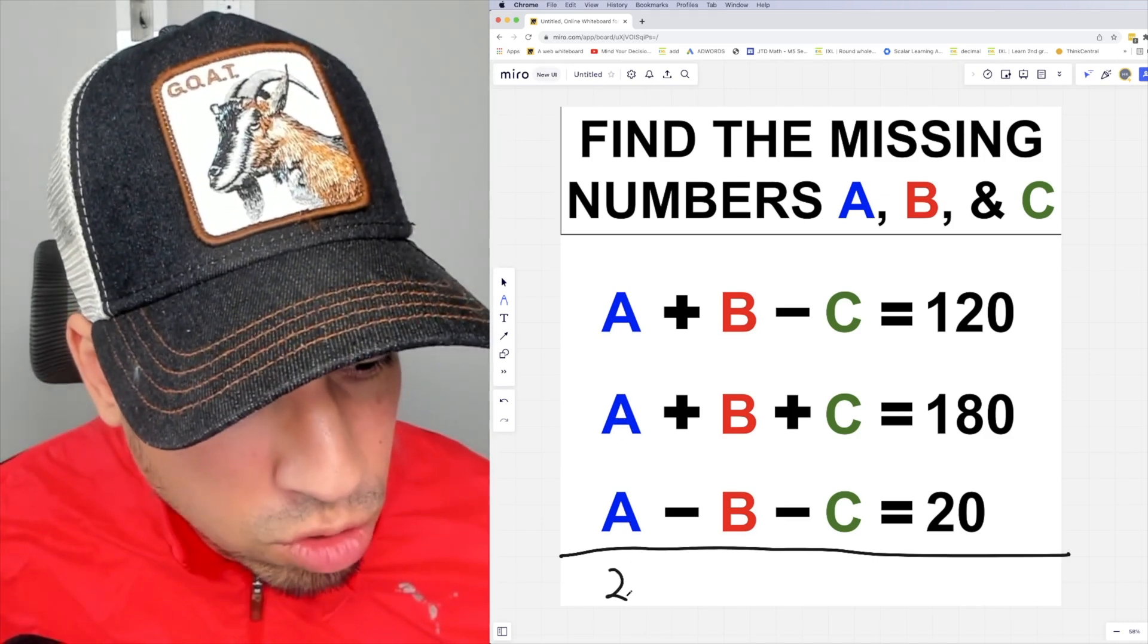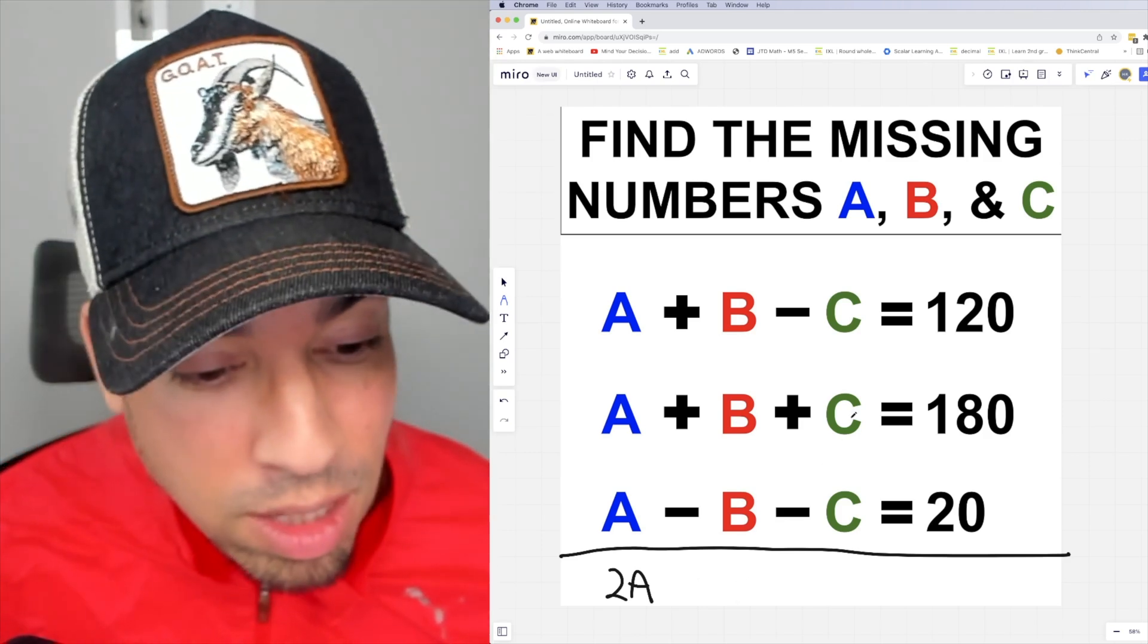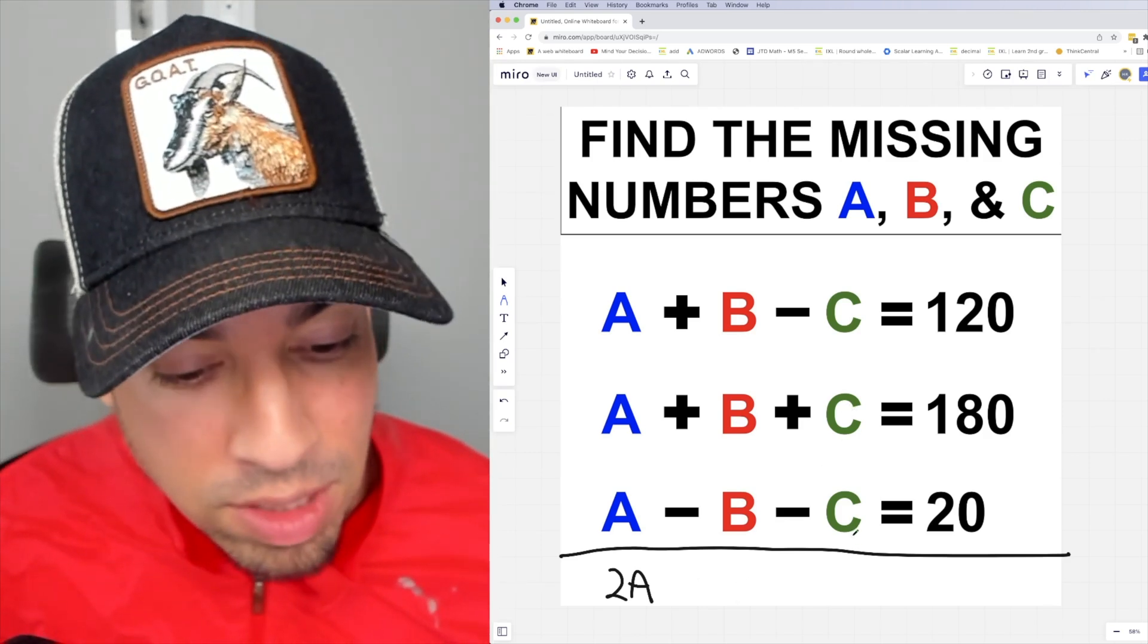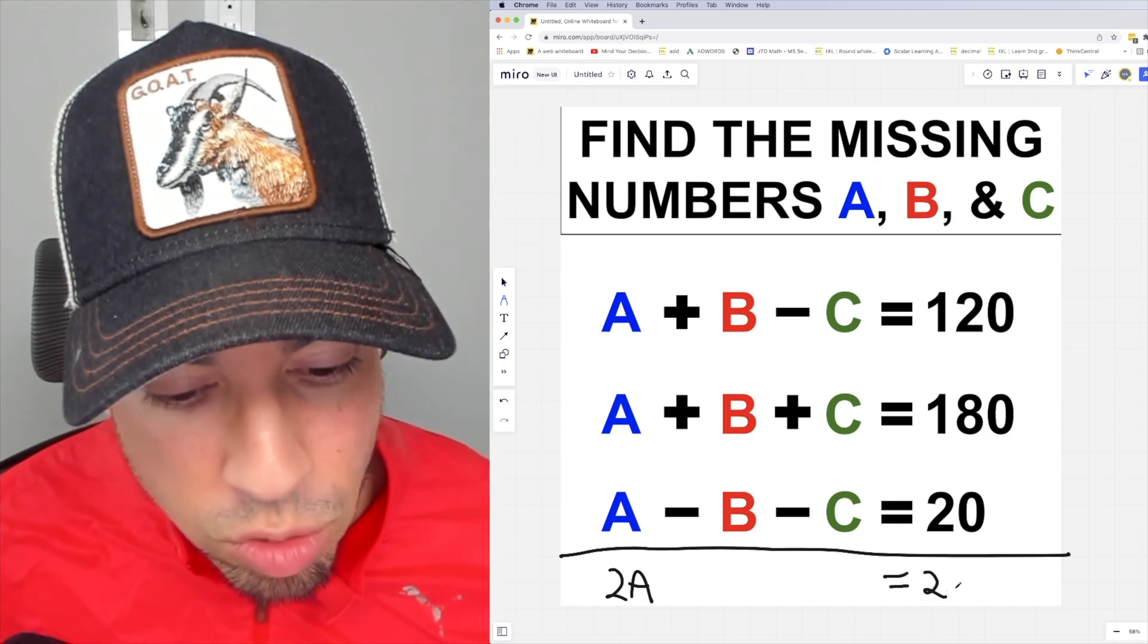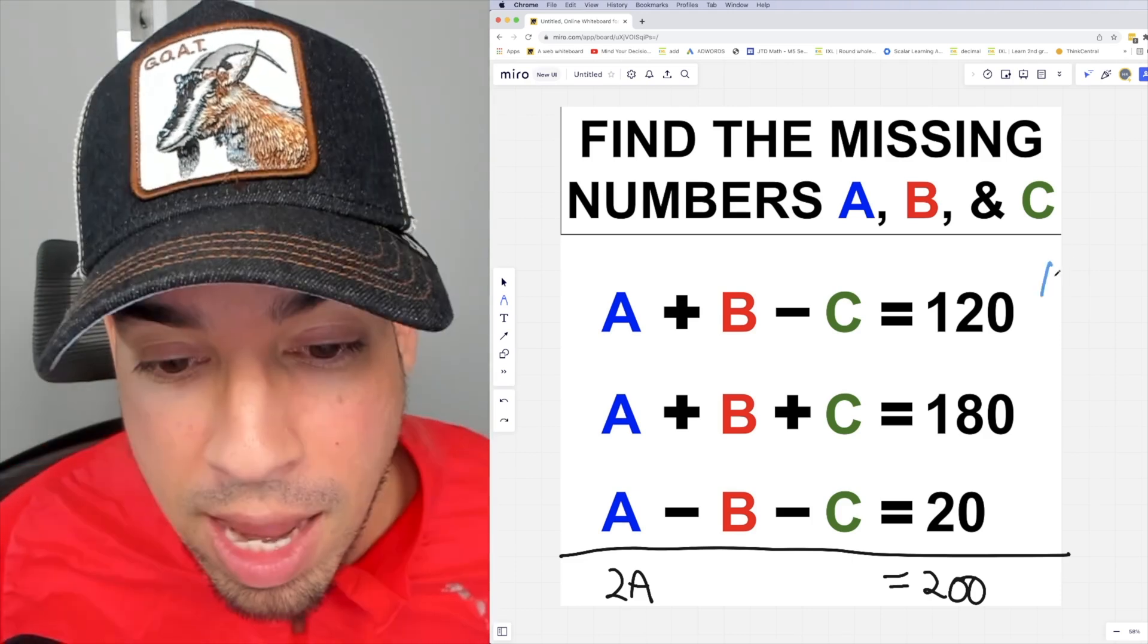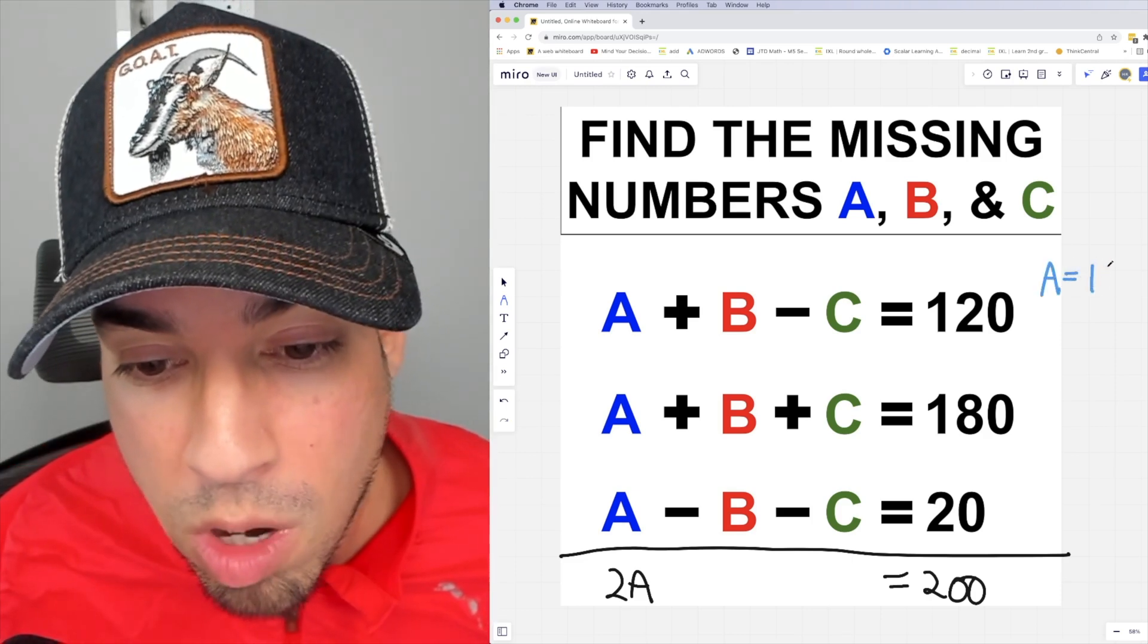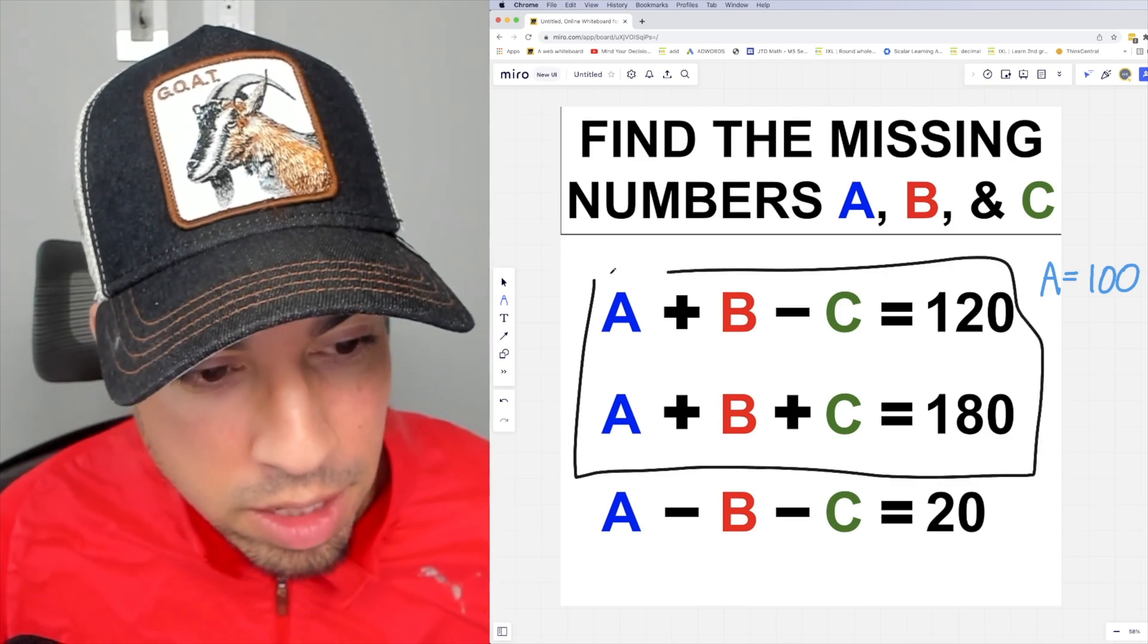If I add the two A's together, I get 2A. I add positive B and negative B, that cancels out to nothing. Positive C and negative C cancels out to nothing. And then 180 plus 20 is 200. That means that 2 times A is 200, therefore A must equal 100.